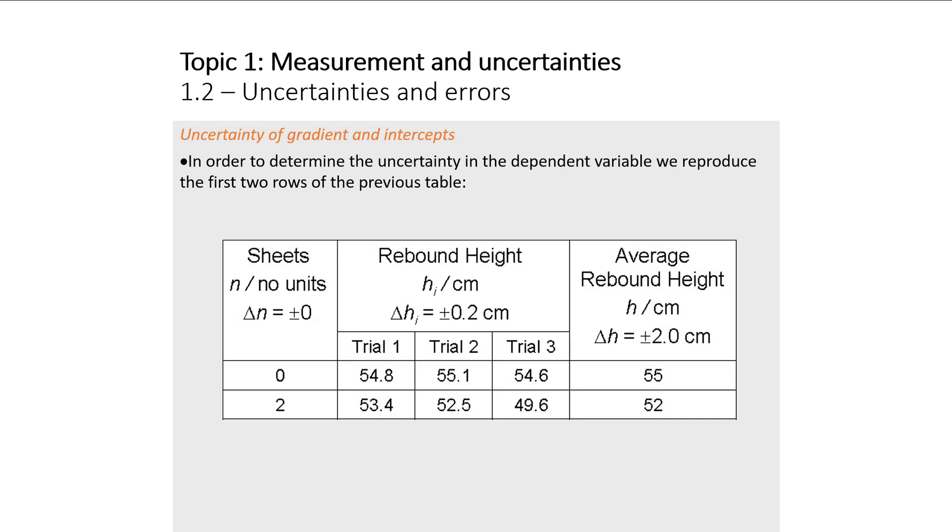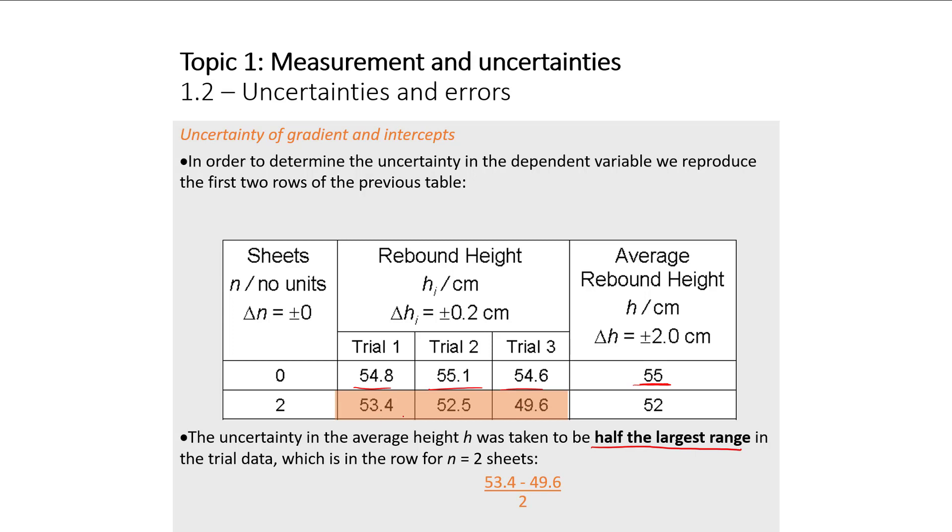So in order to determine the uncertainty in the dependent variable, we are going to look at just an excerpt from the previous table. Now to get our average rebound height, we just averaged our three trials together. And an average is of course you add up all the values and then you divide by the number of values. To get the uncertainty, what we're going to do is take the range of values among the three trials and divide by 2. That is, take the maximum value, subtract the minimum value to get the range, and divide that by 2. So in this case, the largest is 53.4, the smallest is 49.6, subtract them, divide by 2 to get our uncertainty of 2.0. That's where the uncertainty of 2.0 comes from in this height.